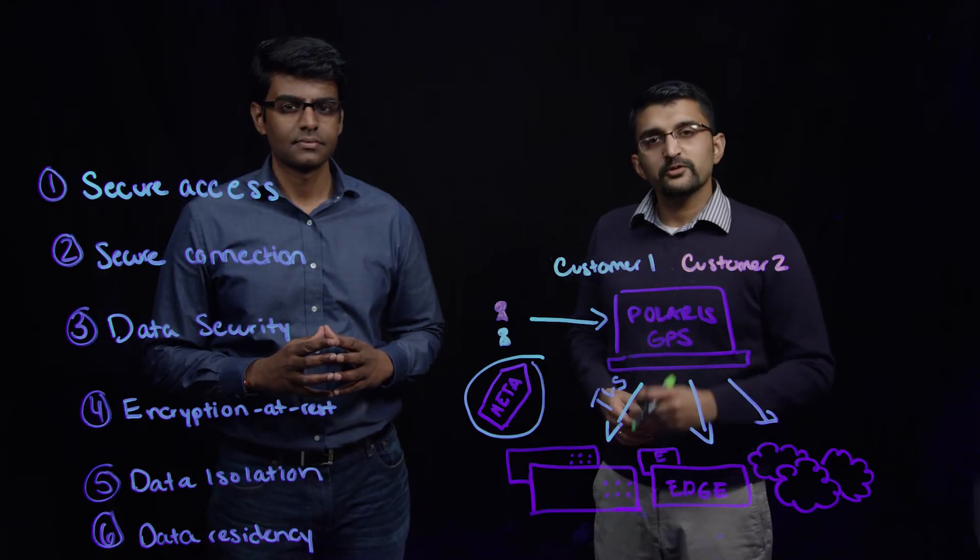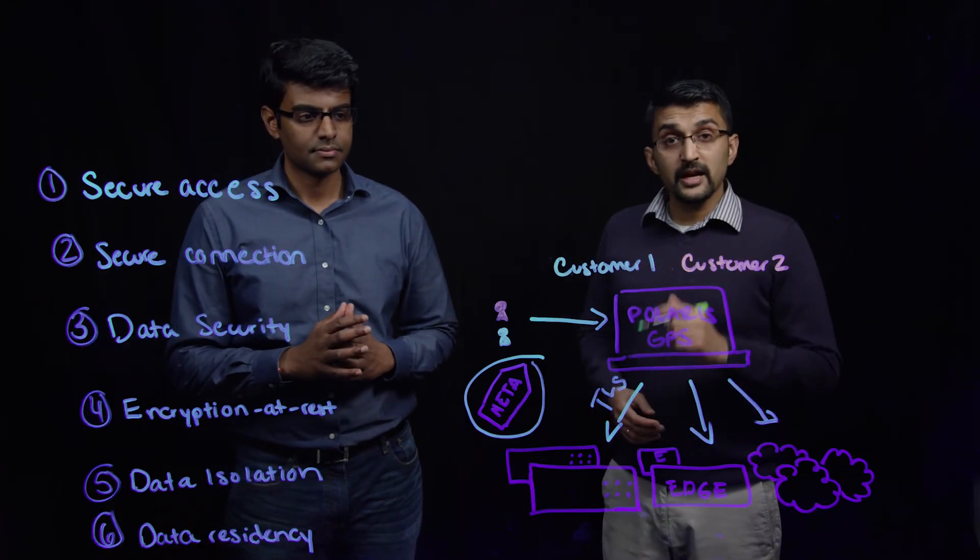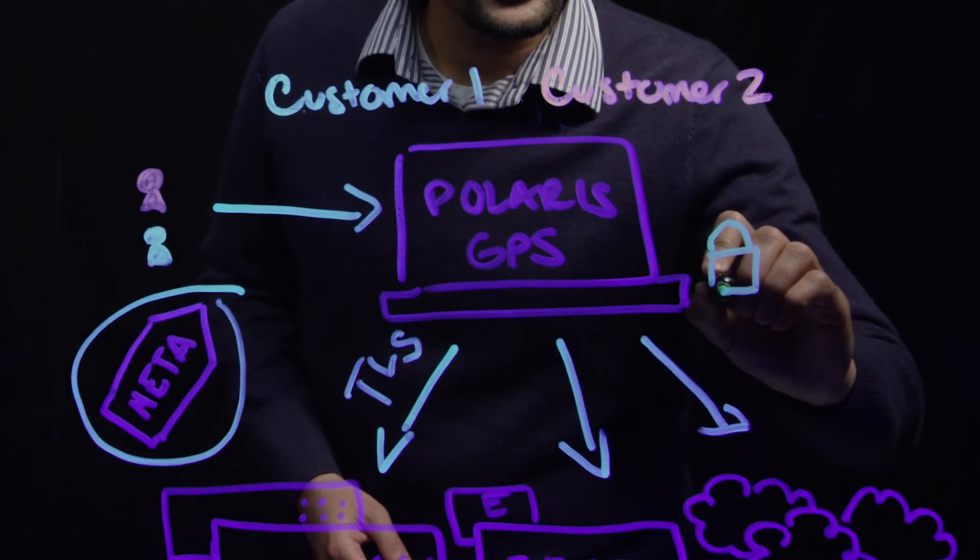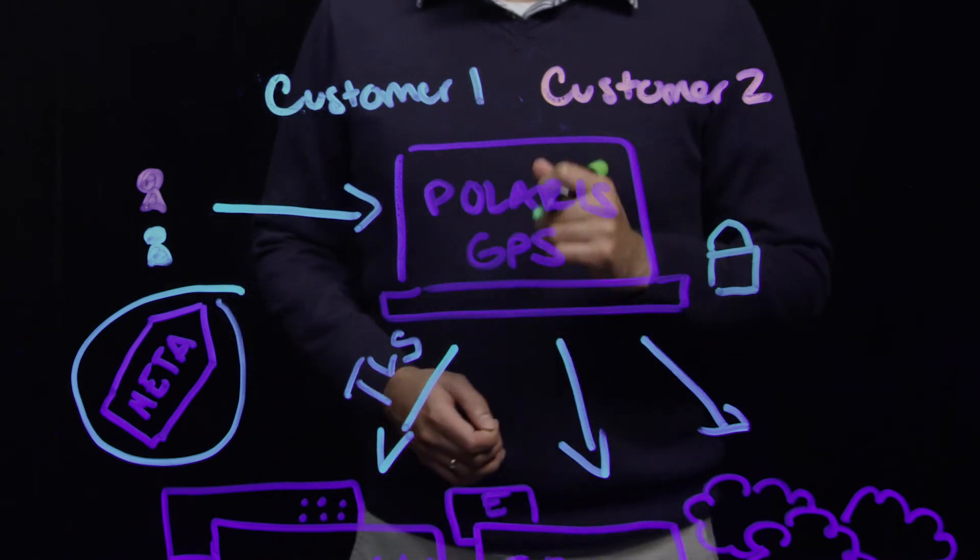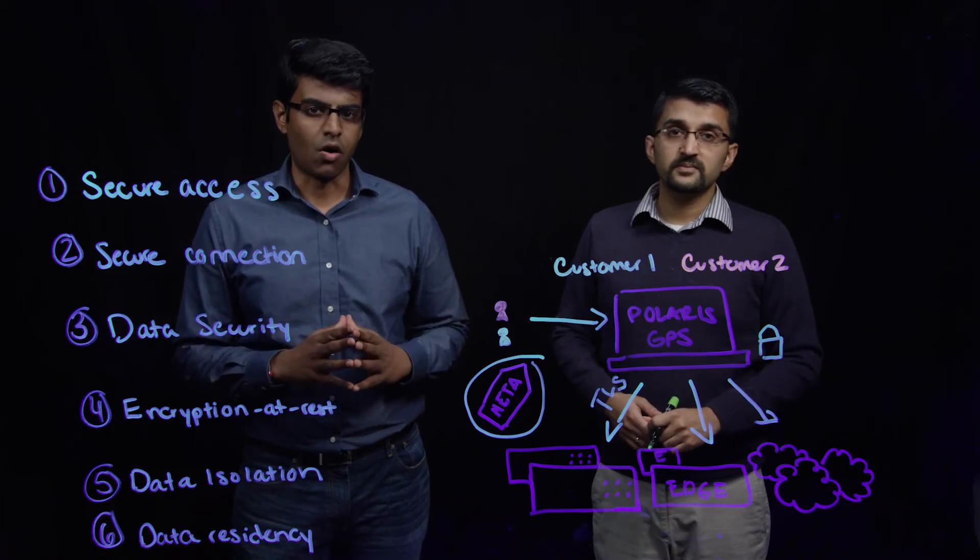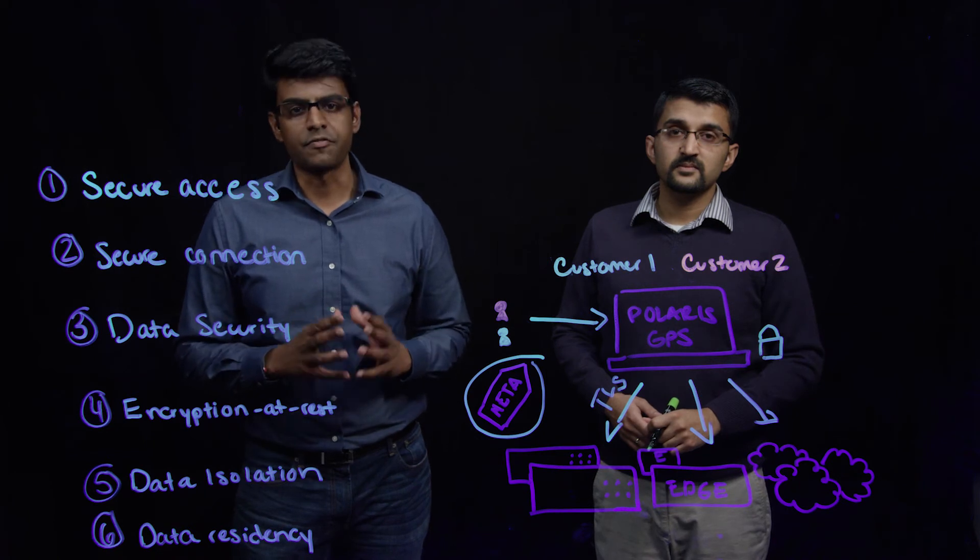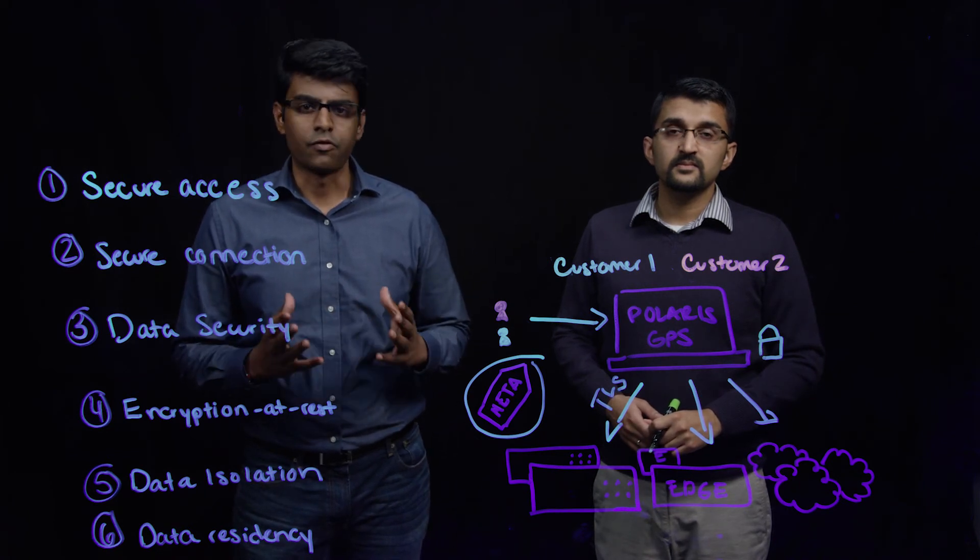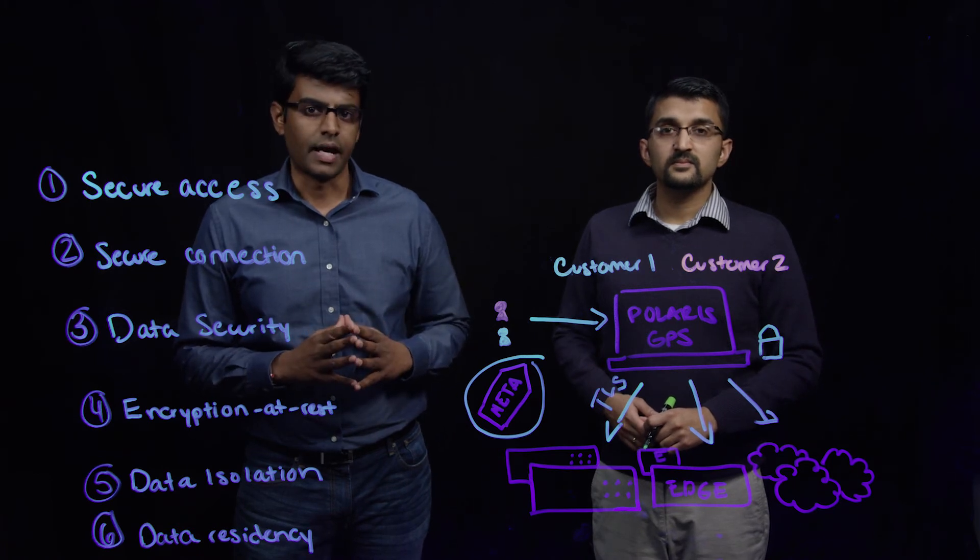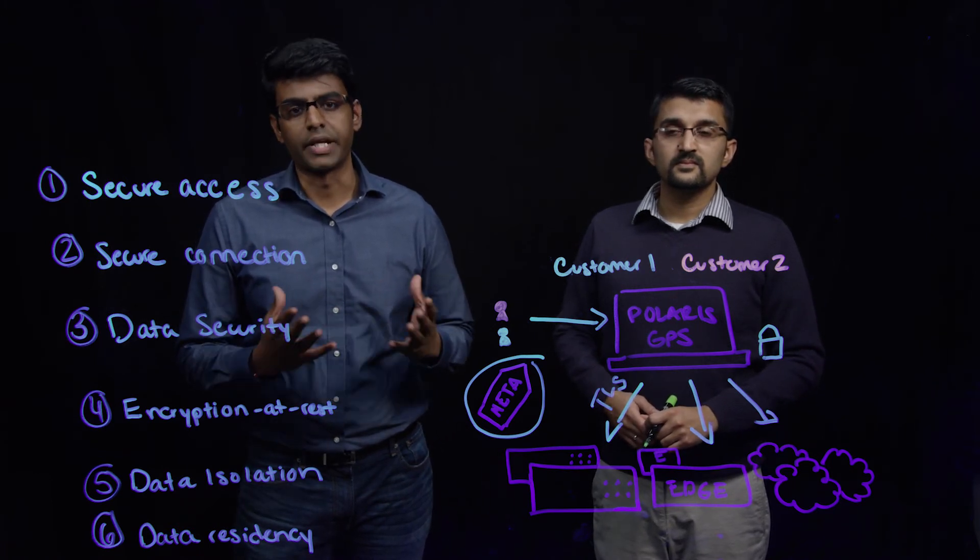Data security is further insured with encryption at rest. All data that is stored on the Polaris platform is encrypted with AES256 encryption. As we all know, encryption at rest offers protection against physical security breaches. For example, it protects data in the unlikely event that a drive is being stolen from the data center.